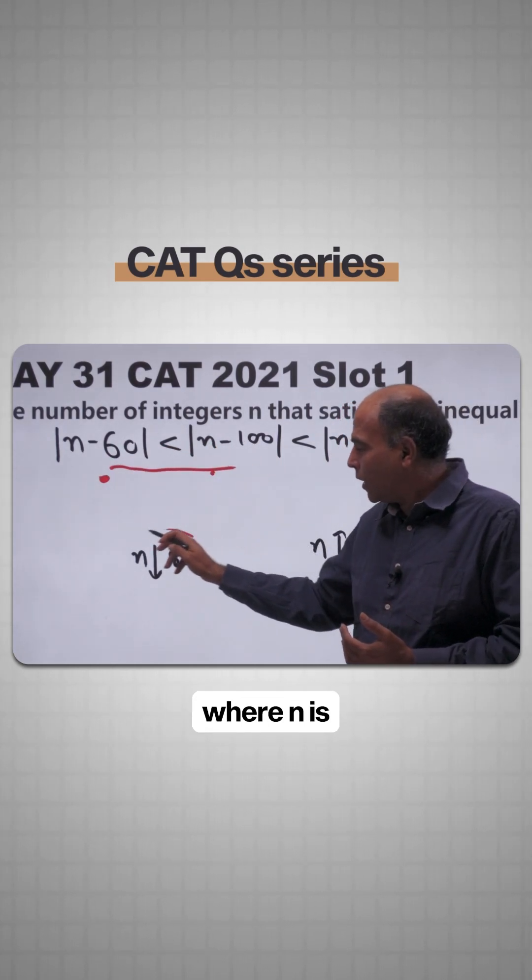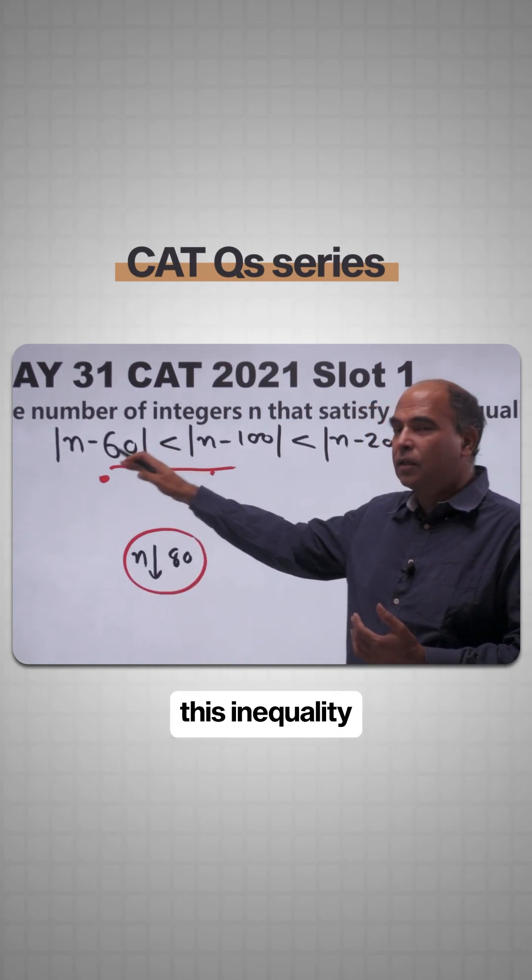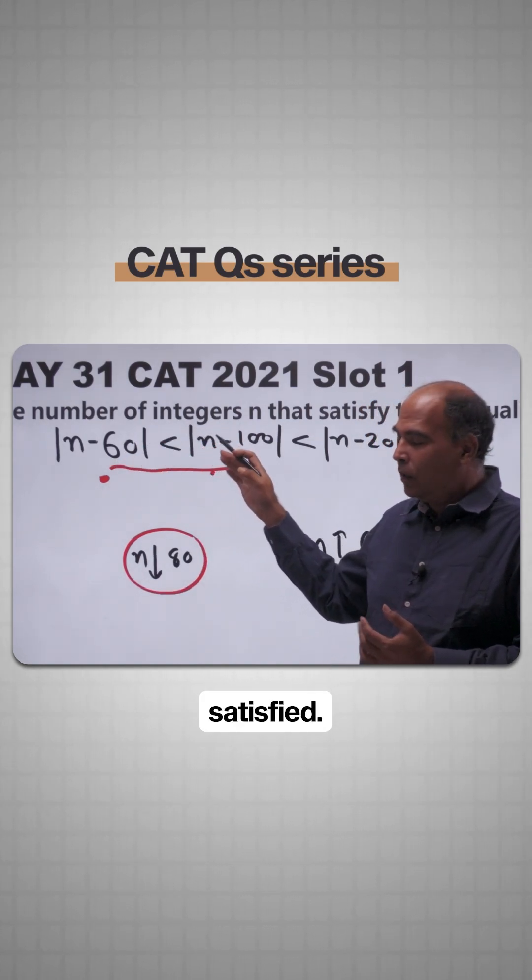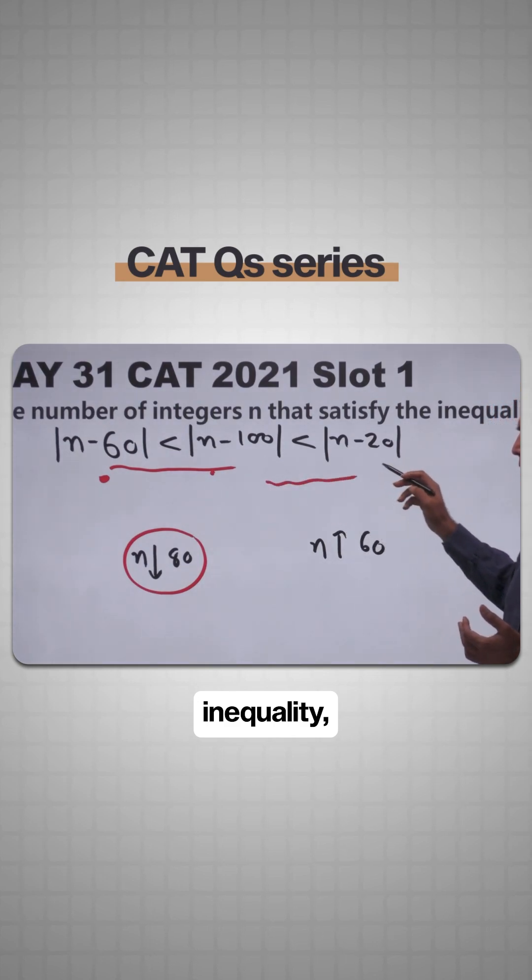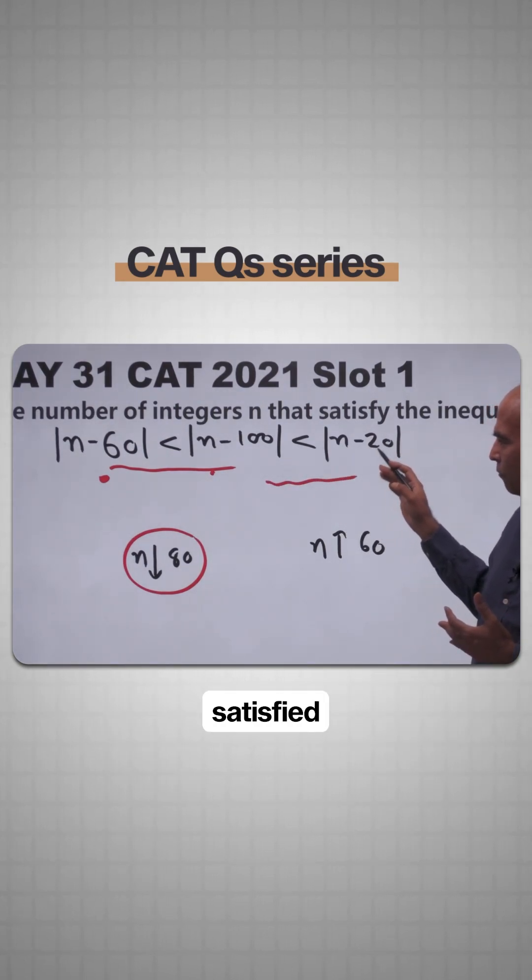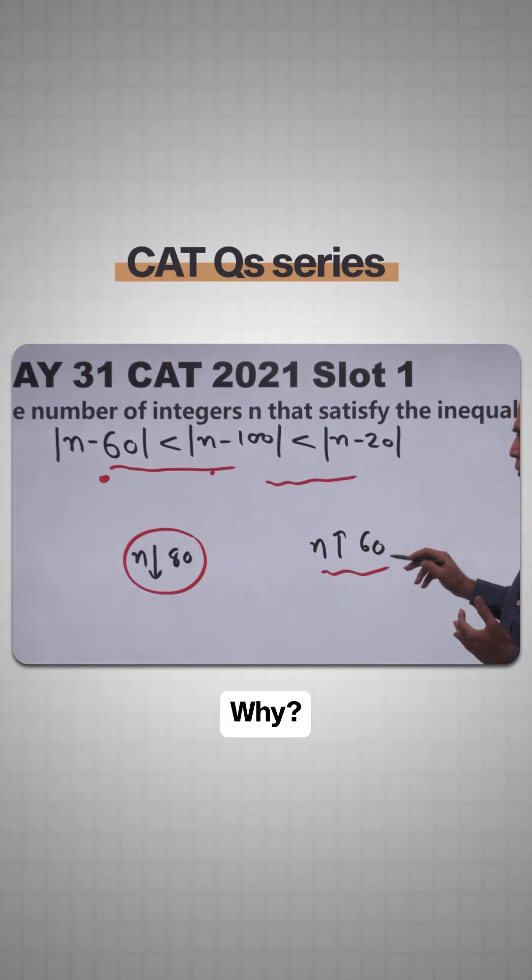So anywhere where n is less than 80, this inequality is satisfied. Now if I look at the other part of the inequality, this part is satisfied whenever n is greater than 60.